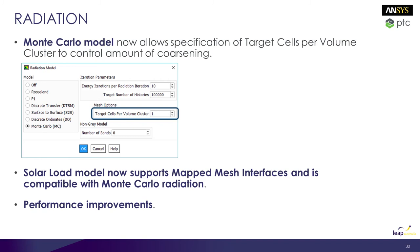Radiation — this module is used across CFX and Fluent. In Fluent, you previously couldn't really target how you controlled subgrouping of cells to make a radiation mesh. You can do that more easily now. You can use the Monte Carlo model with a mapped mesh interface and with solar loads. For both CFX and Fluent, there are performance improvements and bug fixes.